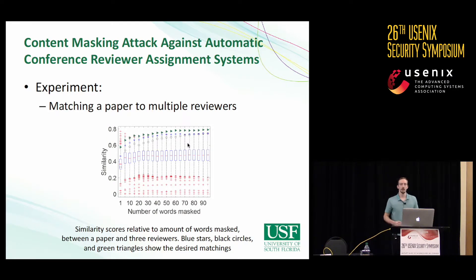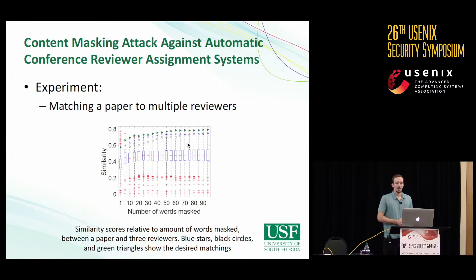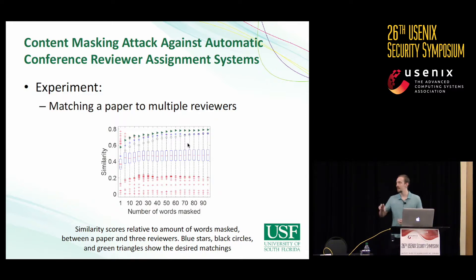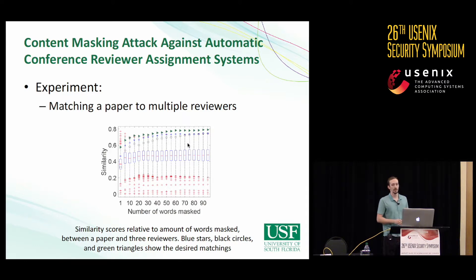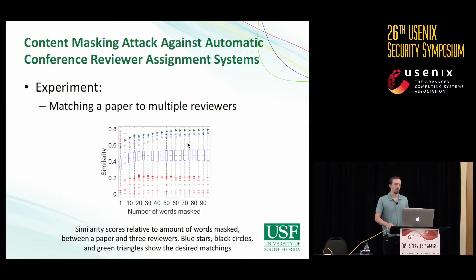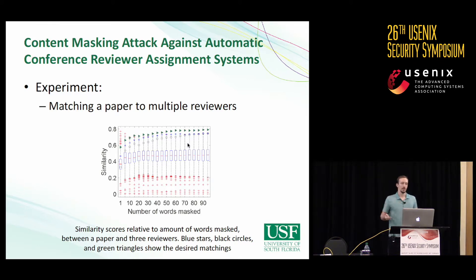We also experiment with targeting multiple reviewers. Usually you need three reviewers to accept your paper before it is accepted. The results show that we can target three specific reviewers simultaneously, making our paper most similar to all three. This works slightly differently than the normal case: instead of the most frequent word being mapped to the most frequent word, you split the mappings over three different people.